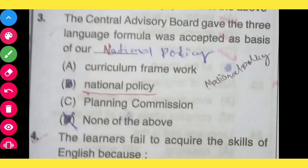The Central Advisory Board gave the three language formula, which was accepted as basis of: option A, curriculum framework; option B, national policy; option C, planning commission; option D, none of the above. The correct answer is national policy. The Central Advisory Board gave the three language formula, which was accepted as basis of our national policy.